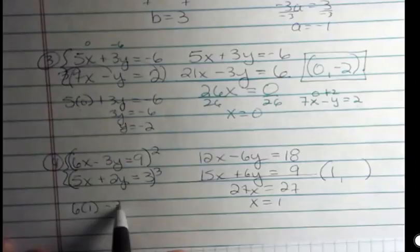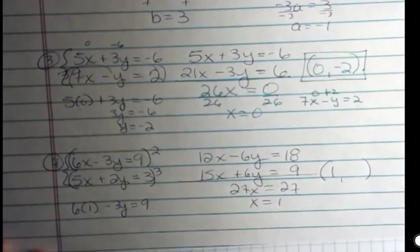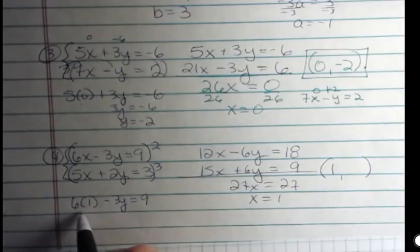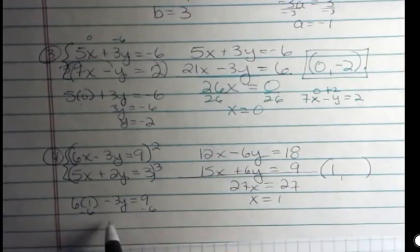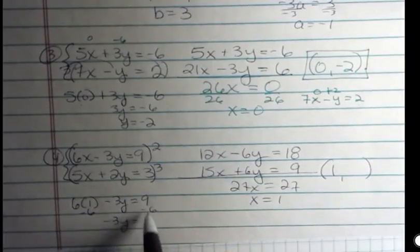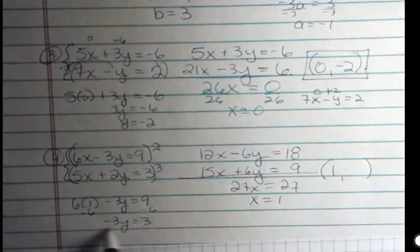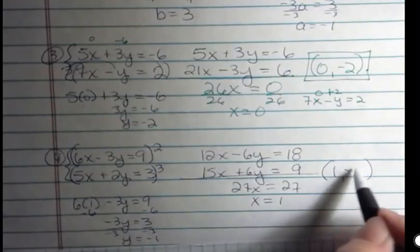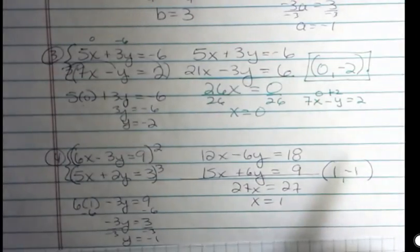So 6 times 1 minus 3y is 9. The other half of the answer is just plugging in and see. I can see 6 times 1 is 6. So I'm going to subtract 6 from both sides. 9 minus 6 is 3. And dividing both sides by negative 3, I get y is negative 1. That's what I think my answer is.